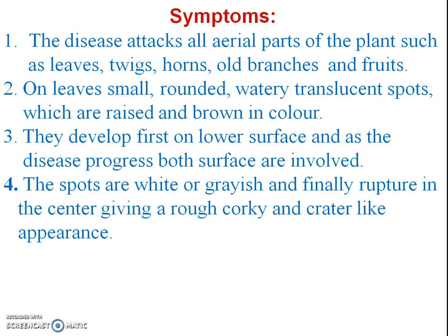Symptoms: The disease attacks all aerial parts of the plant such as leaves, twigs, thorns, old branches, and fruits. On leaves, small rounded watery translucent spots which are raised and brown in color develop first on the lower surface, and as the disease progresses both surfaces are involved. The spots are white or grayish and finally rupture in the center, giving a rough, corky, and crater-like appearance.